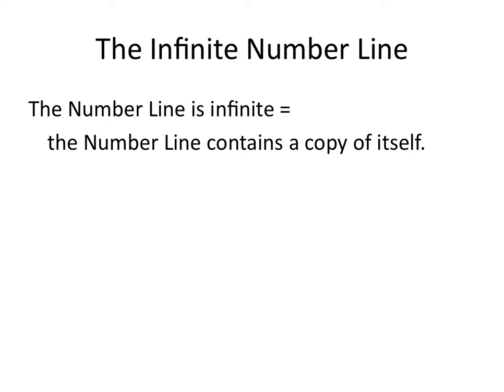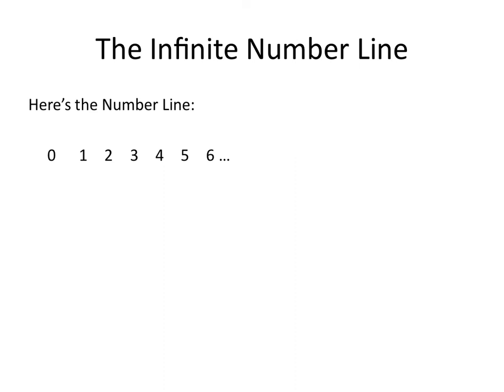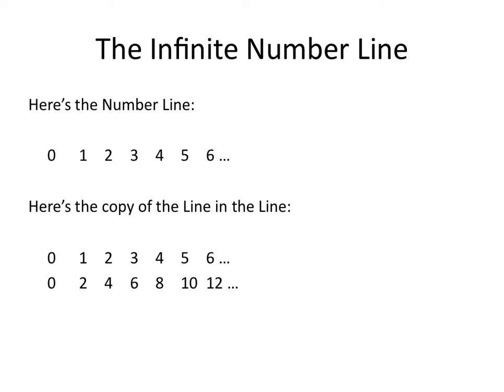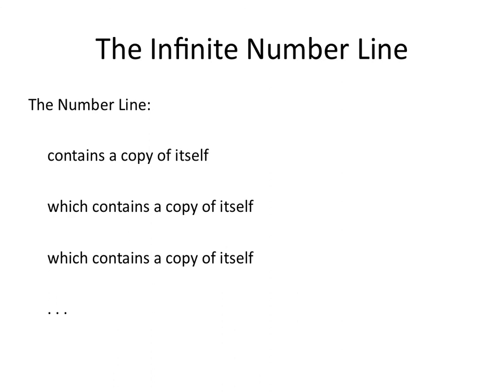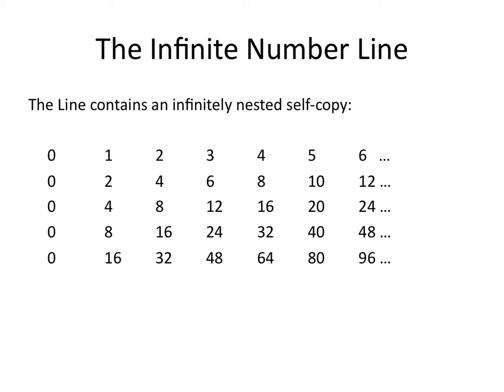What about the number line? We say the number line is infinite, so that must mean it contains a copy of itself — but how? Here's a copy of the line in the line: 2, 4, 6, 8, 10, 12 — it's just the even numbers. The even numbers are a copy of the line in the line. The number line contains a copy of itself, which contains a copy of itself, which contains a copy of itself, and so it goes. The line contains an infinitely nested self-copy: the number line contains the even numbers, which is a copy of the line in the line. But there's a copy of the even numbers in the even numbers — those are the numbers that proceed by fours. There's a copy of those numbers in those numbers, proceeding by eights, then count by sixteens, and so it goes.